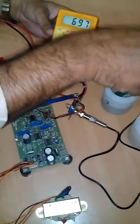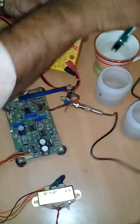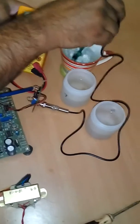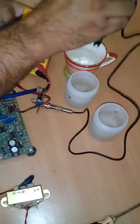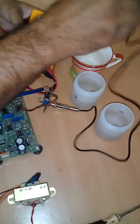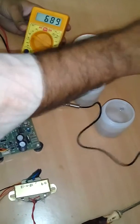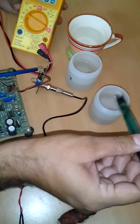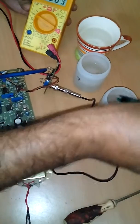Now rinse the pH electrode in plain water. Remove the excess water from the electrode and dip the electrode in the solution whose pH you need to measure.